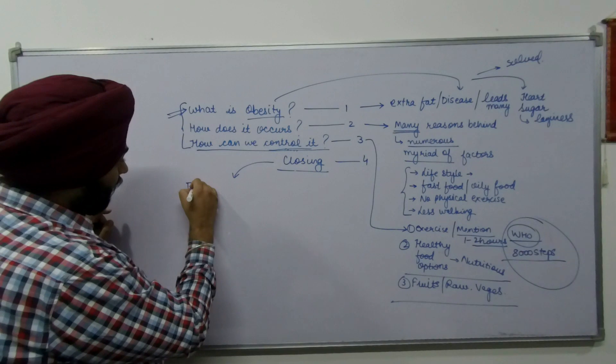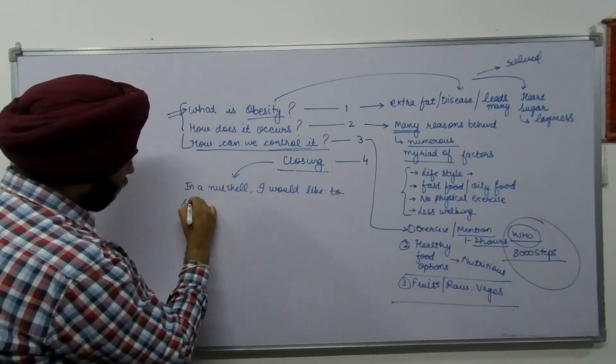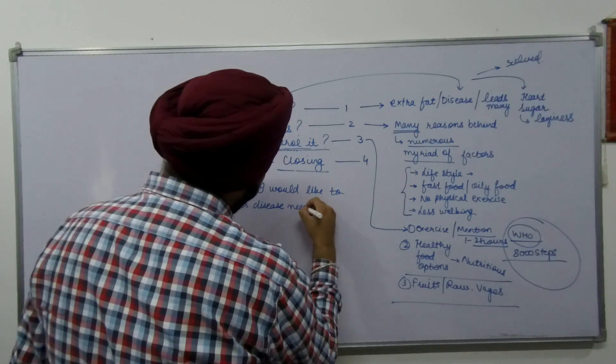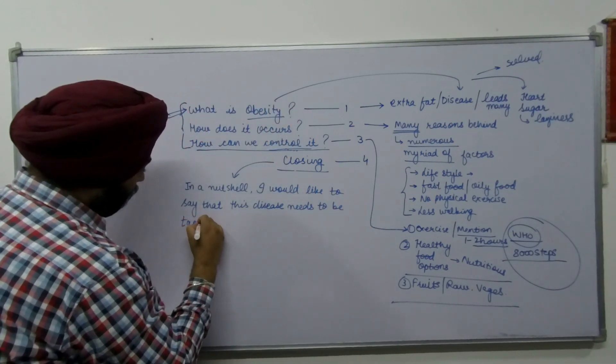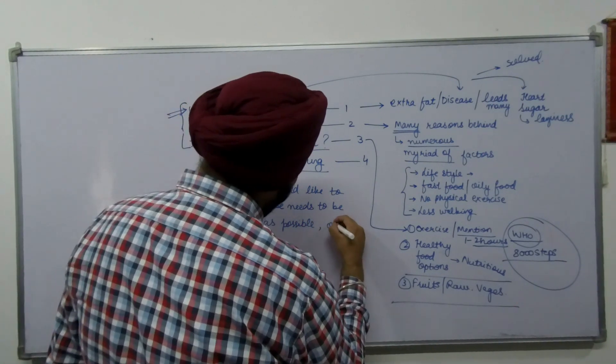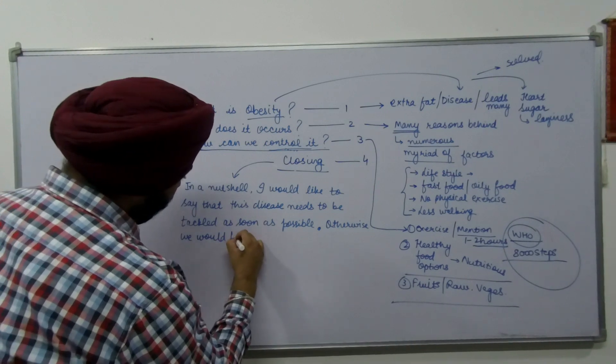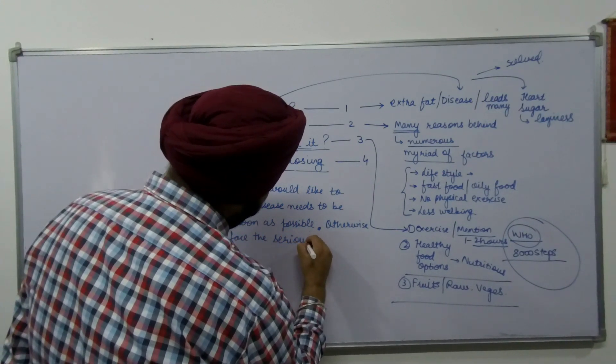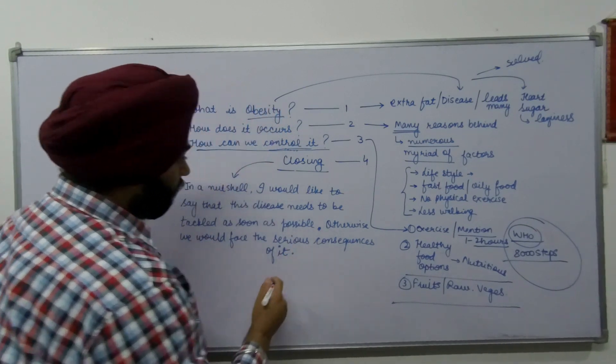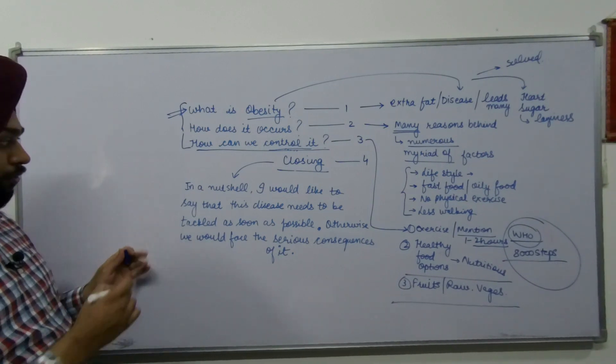Many students ask me about difficulty in closing essays. I have a very simple solution. You must always see the first line of the essay question and then you will find your closing. My first line was obesity. Obesity is a disease that leads to many other diseases, it is a major problem and it needs to be solved because they were also asking for solutions. How will you formulate your closing? You can write: In a nutshell, I would like to say that this disease needs to be tackled as soon as possible, otherwise we would face the serious consequences of it. I am just going on the side, you can take a screenshot for the ideas, for the introduction, and also for the overall part. You must practice this essay by using the connectors and the words that I have given to you.